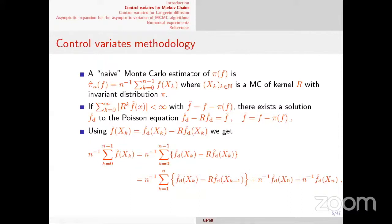The Poisson equation: a solution f_hat is a function satisfying (I - R) f_hat = f_tilde, where f_tilde is f minus pi(f). Assuming the kernel is sensible, the Poisson equation exists under very general conditions. Once you have this Poisson solution, you substitute f_tilde by f_hat minus R f_hat. You decompose the sum by shifting x_k to x_{k-1}, add and subtract boundary terms, and obtain a decomposition. What appears there is a martingale increment, so the entire quantity is a martingale.